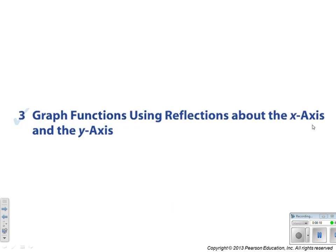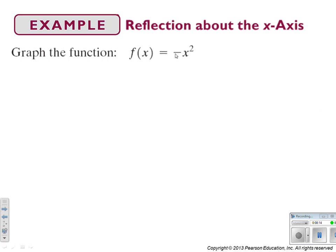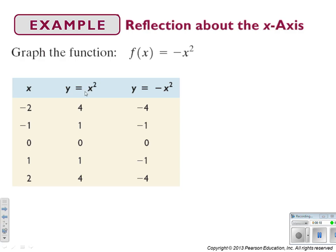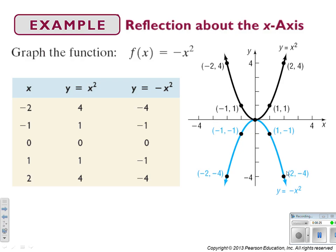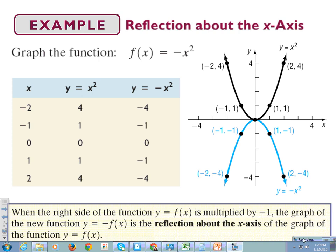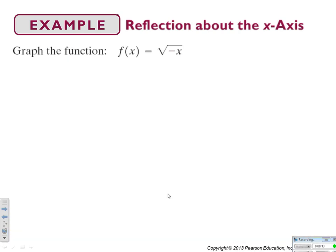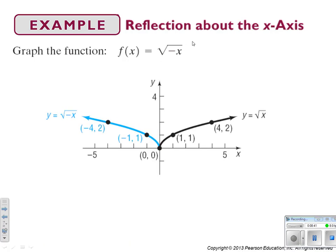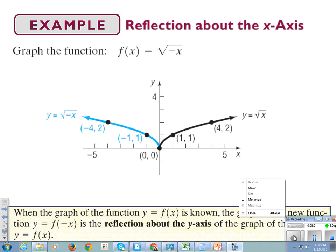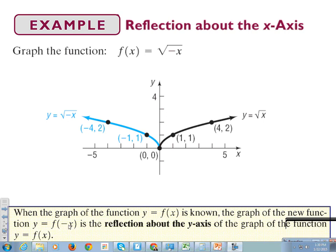We're going to use reflection about the x-axis and the y-axis. To reflect about the x-axis, take the function and multiply it by negative 1 — it automatically reflects about the x-axis. To reflect about the y-axis, we replace the x value with negative x. Here is the parent function y equals the square root of x, and the reflected function is y equals the square root of negative x.